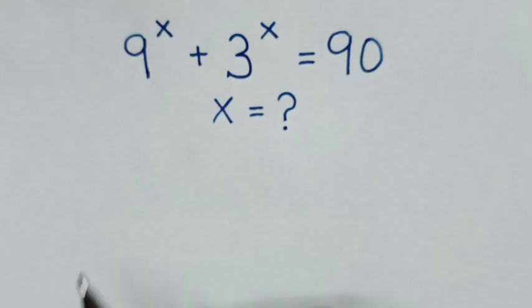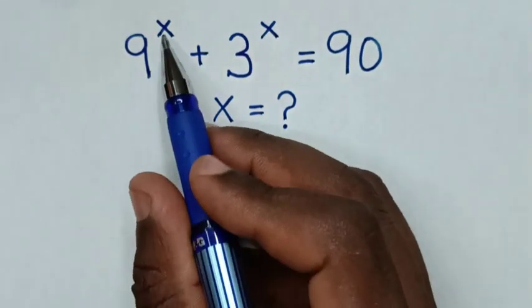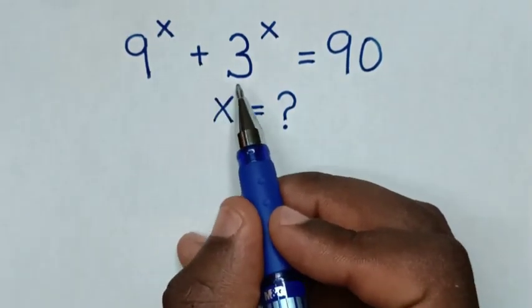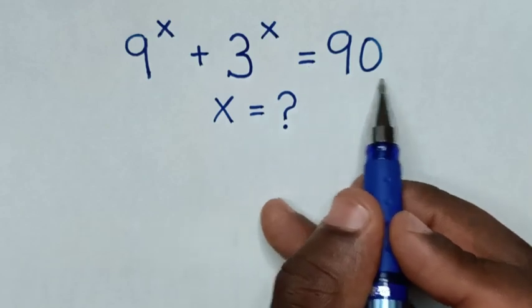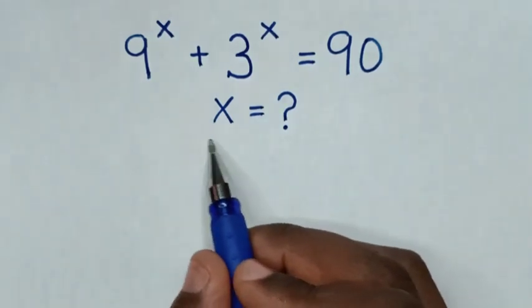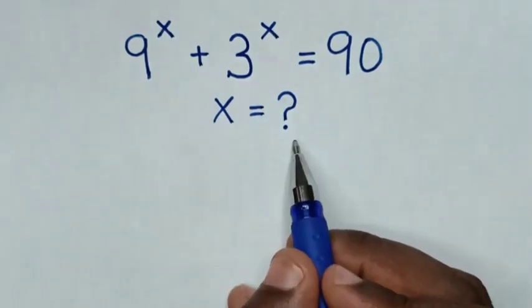Hello! How to solve 9 power x plus 3 power x is equal to 90, to find the value of x.